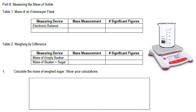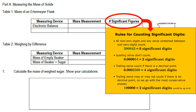This is what the lab report looks like. Table 1 is for the mass of the Erlenmeyer flask — you measure the mass and record it in the areas given as mass measurement, and they also ask for significant figures. To determine significant figures there are rules to follow. Rule 1: all non-zero digits and any zero contained between non-zero digits count as significant digits — for example, 3,004.2 has six significant figures. Leading zeros don't count. Trailing zeros count if there is a decimal point. Trailing zeros may or may not count if there is no decimal point, so we go with the most conservative answer.